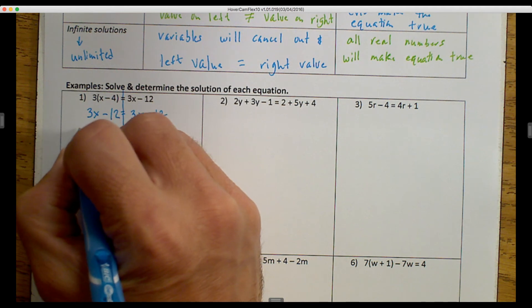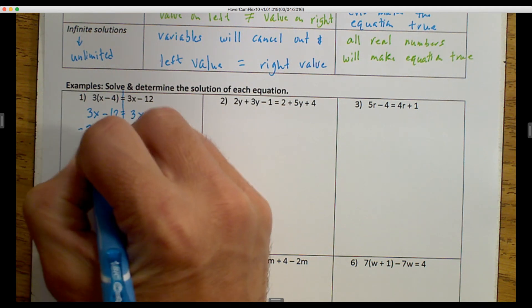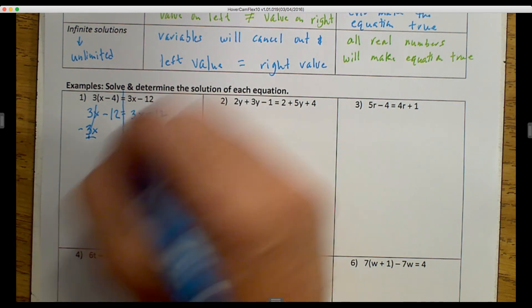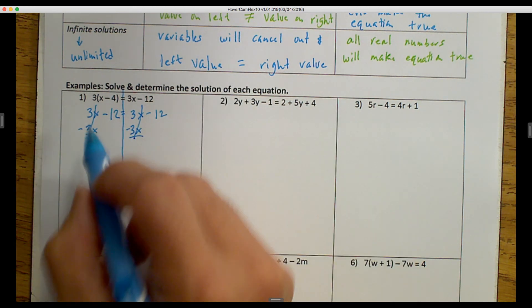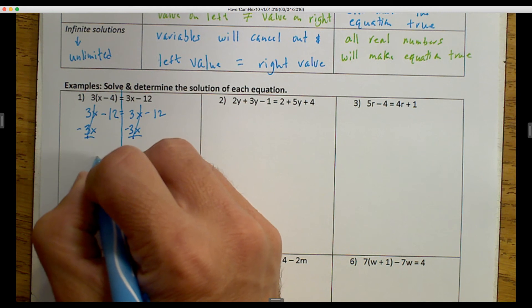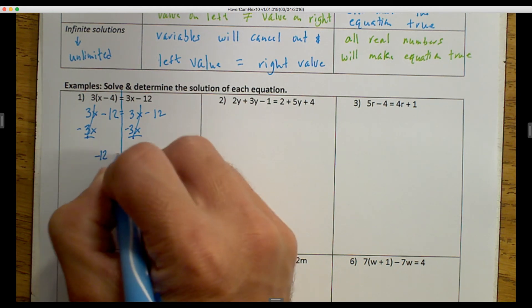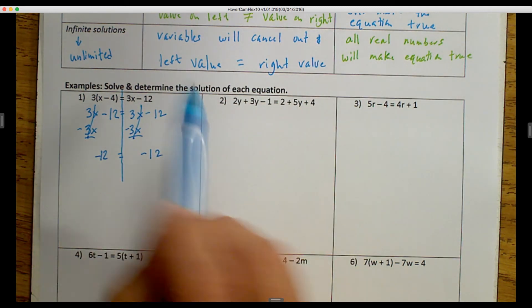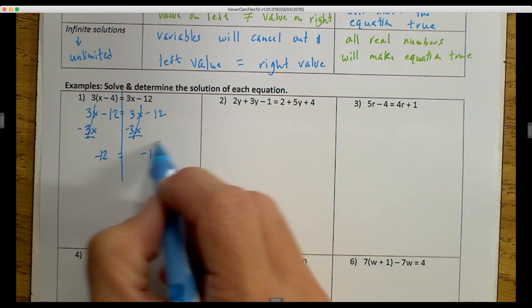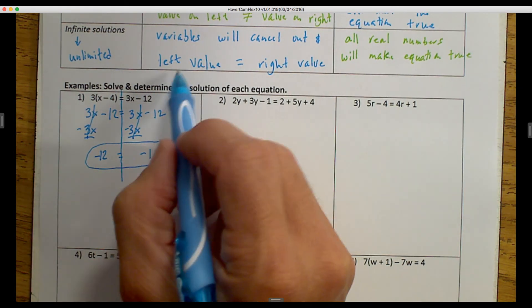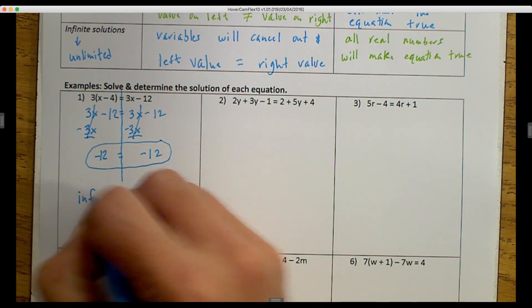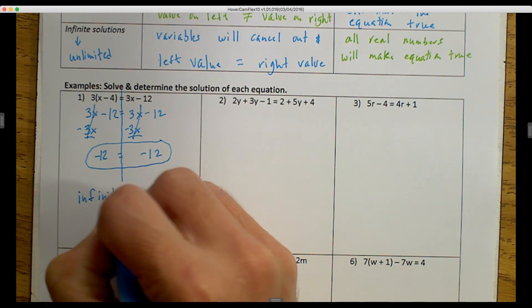But I will take it one step further. I always isolate my variables first by subtracting them. 3x minus 3x cancels out. So the variables just canceled out. And then I'm going to bring my value on the left down, negative 12 is equal to negative 12. So which one up here talked about the variables canceling out and the left side equaling the right side? That is infinite solutions. So we would write down infinite solutions.